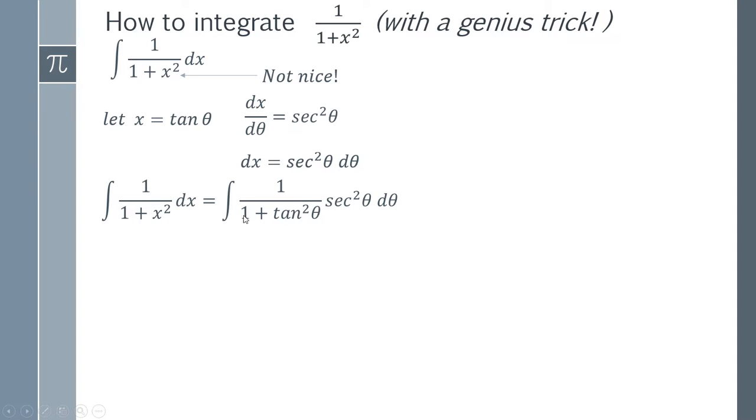Now the other clever thing that we can do is we can recognize that this bottom part is actually another trig identity. Sec squared theta is actually one plus tan squared theta, so you can actually replace all of this with sec squared.